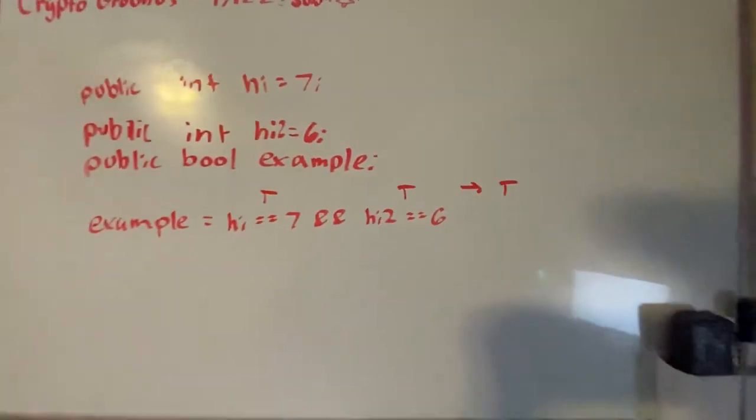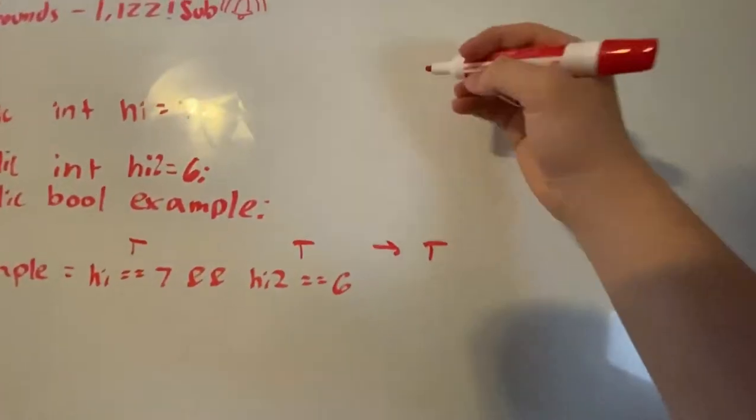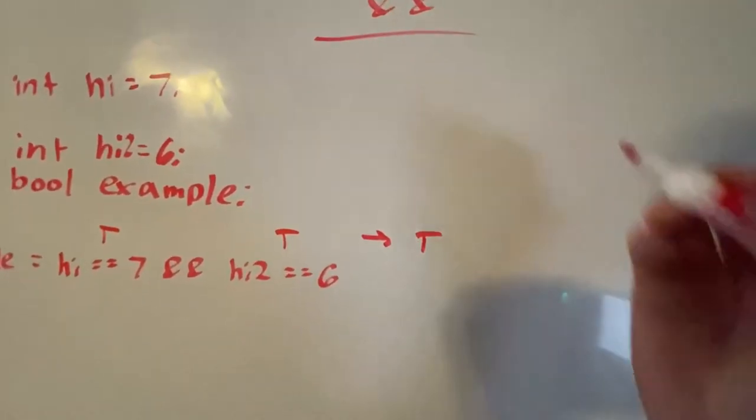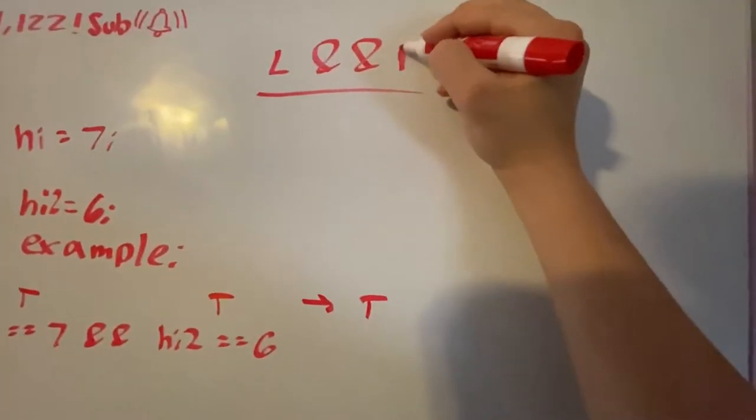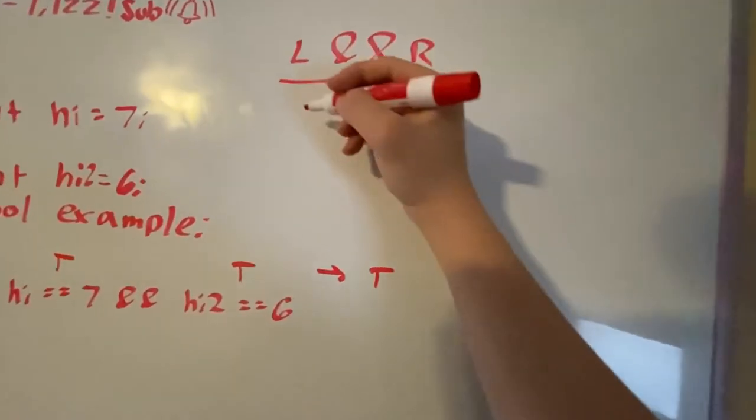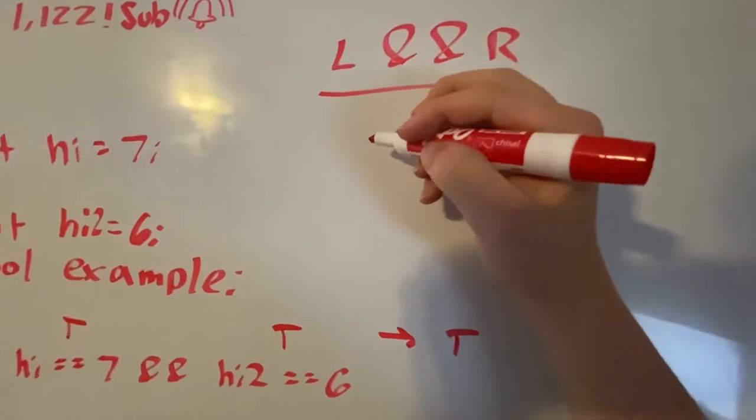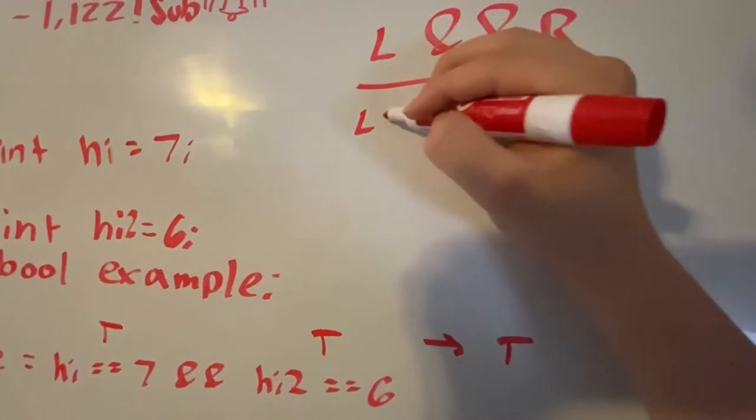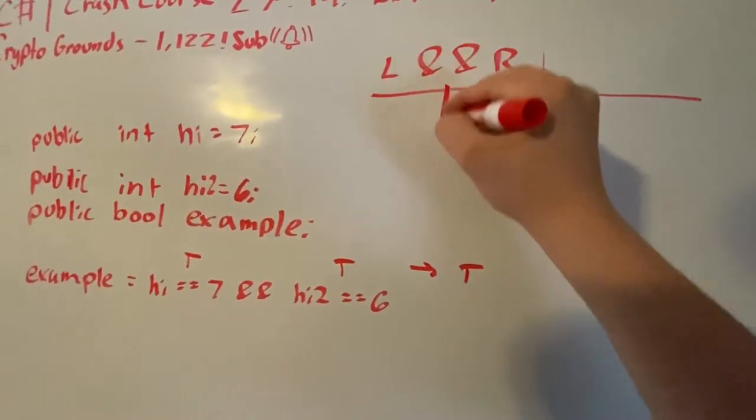If one of them's false, it'll be false. So I'll kind of make a table for that. So let's say we have L and R, L for left, R for right. So let's say L, so this will be our output, I guess.